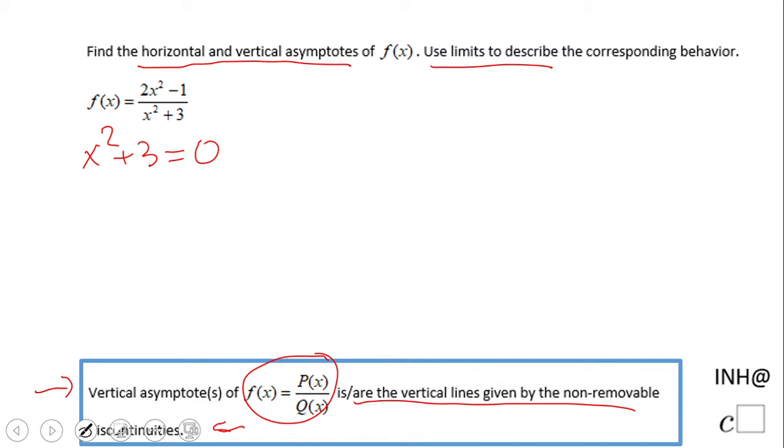If the denominator equals zero, those are the possible vertical asymptotes. Remember they have to be non-removable. In this case we have no situation where this Q(x) equals zero, so no vertical asymptote. Pretty easy, right?